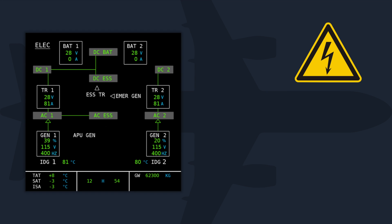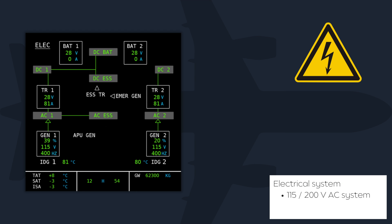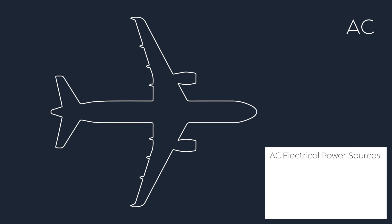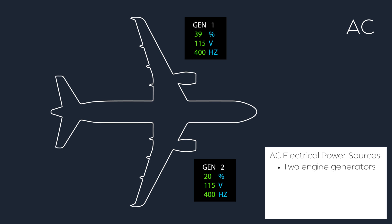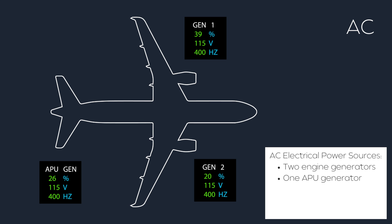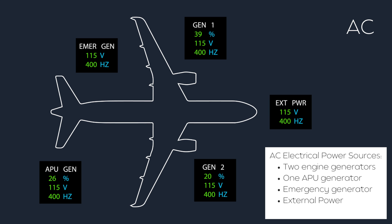The A320 electrical system is comprised of AC and DC systems. The AC system is 3-phase 115-200 volts and the DC system is 28 volts. The aircraft's AC electrical power sources are 2 engine-driven AC generators, 1 APU-driven AC generator, an emergency AC generator powered by the RAM air turbine via the blue hydraulic system, and external power. If all other power sources are inoperative, a static inverter will convert battery DC power into AC power, for limited use.